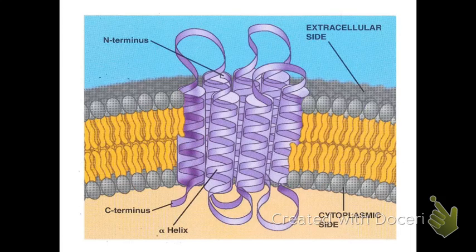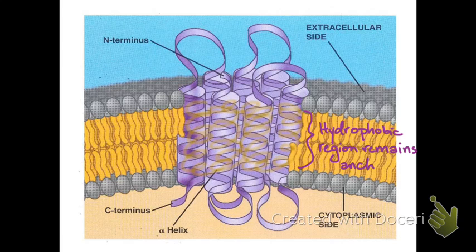Zooming in a little bit more, you can see the hydrophobic region is what keeps this, what we call a transmembrane, because it crosses through the membrane. It's what keeps this transmembrane protein anchored in the membrane, and then it has a domain on either side of the membrane that can do something else.